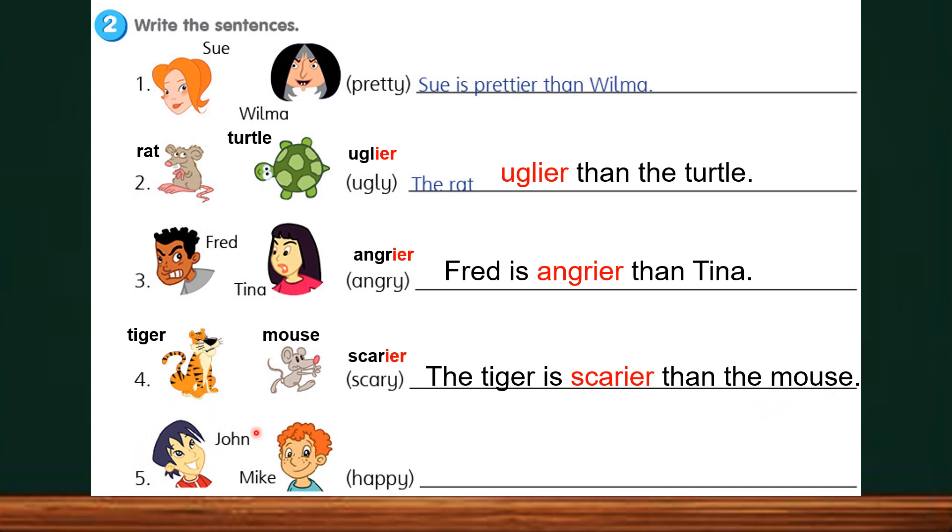Question 5. This is John. And this is Mike. The comparative adjective for happy is happier. Please look at the face of these two persons. Who is more happier? Correct is John. The sentence is John is happier than Mike.